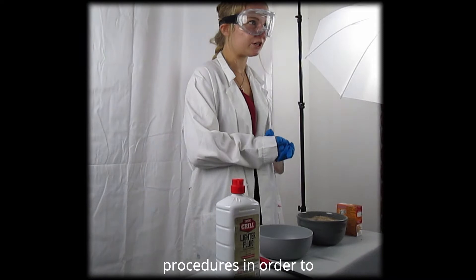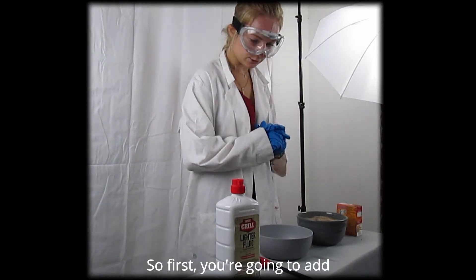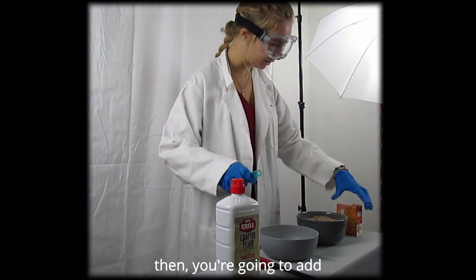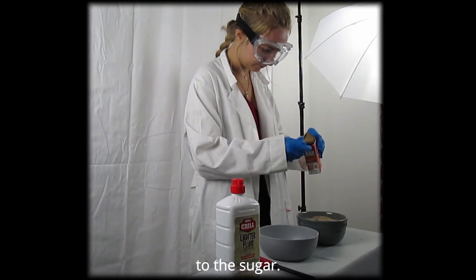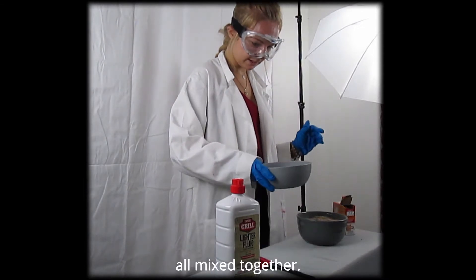Let's go over the procedures in order to create our fire snake. First, you're going to add four teaspoons of sugar into a bowl. Then, you're going to add one teaspoon of baking soda to the sugar. Make sure it is all mixed together.